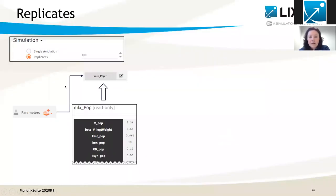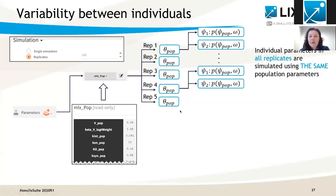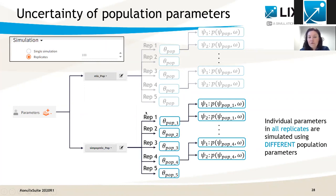Let's look in more detail at how replicates work. So far, in all simulations, for parameters I used the MLX-pop element, which contains one set of population parameters estimated by Monolix. When simulating replicates, each replicate has the same population parameters, which are then used to simulate individual parameters. But this is not the only option — I could also use a different set of population parameters for each replicate. In other words, I could use a different population for each replicate and then simulate individual parameters from that population.